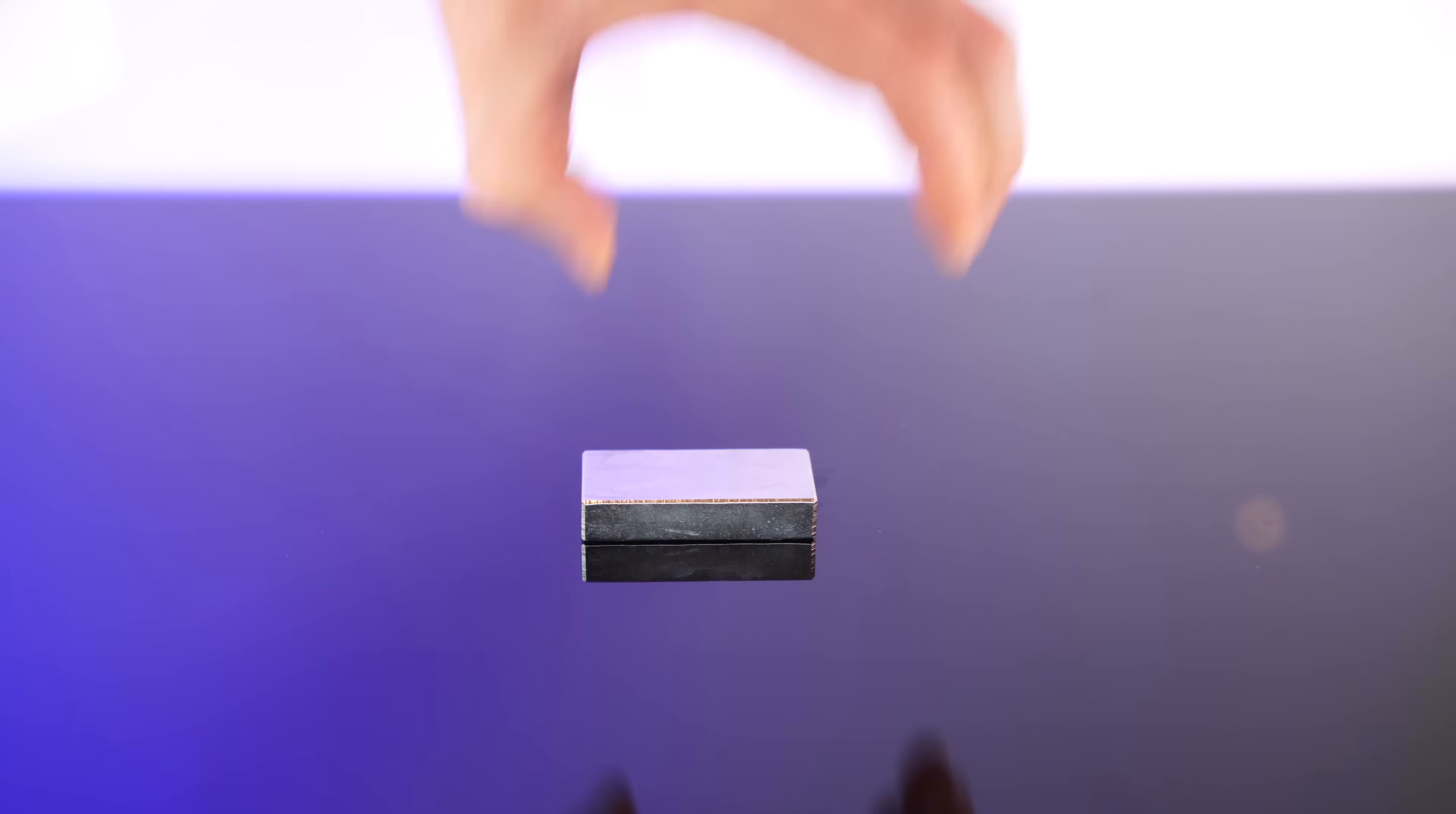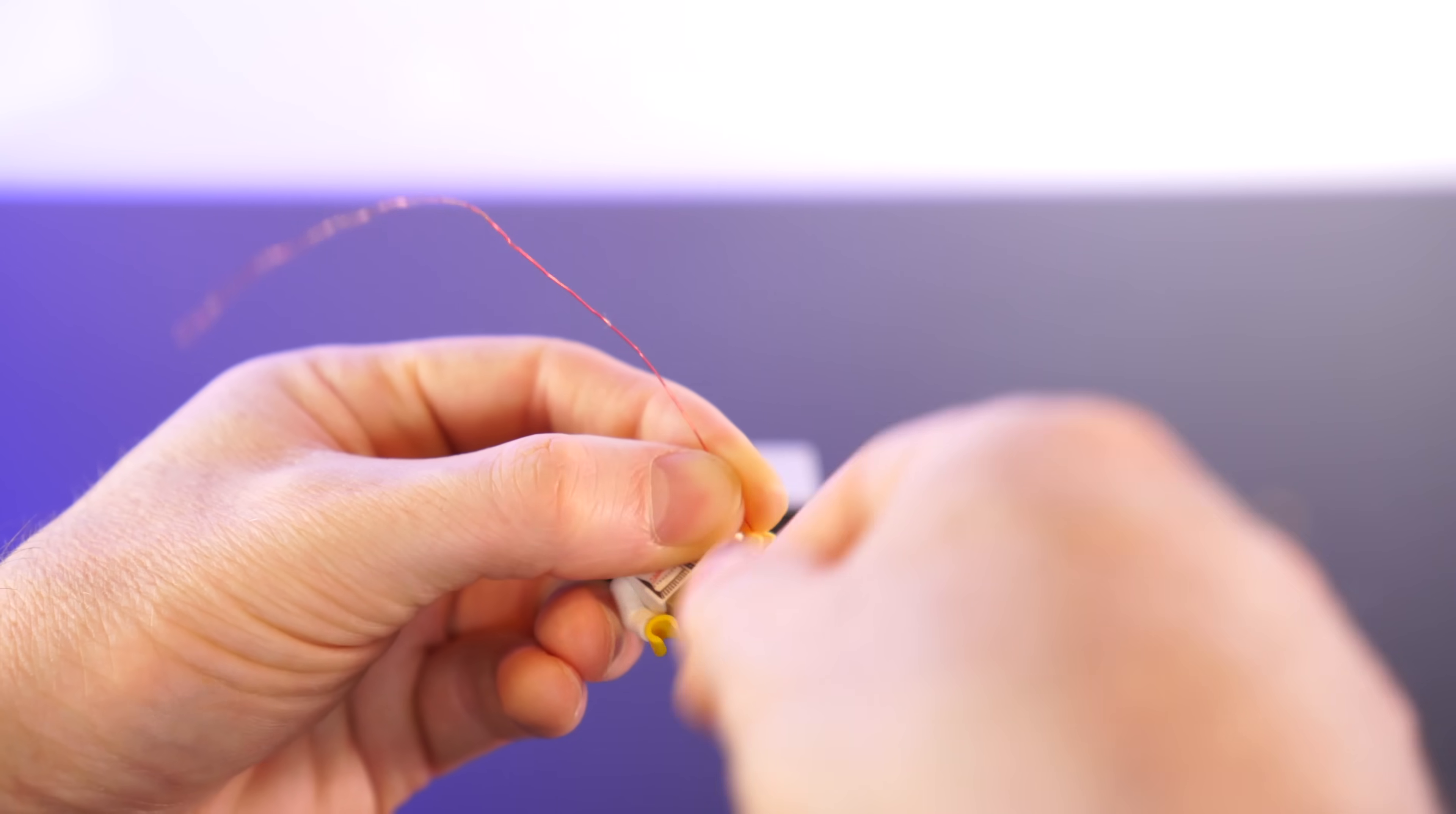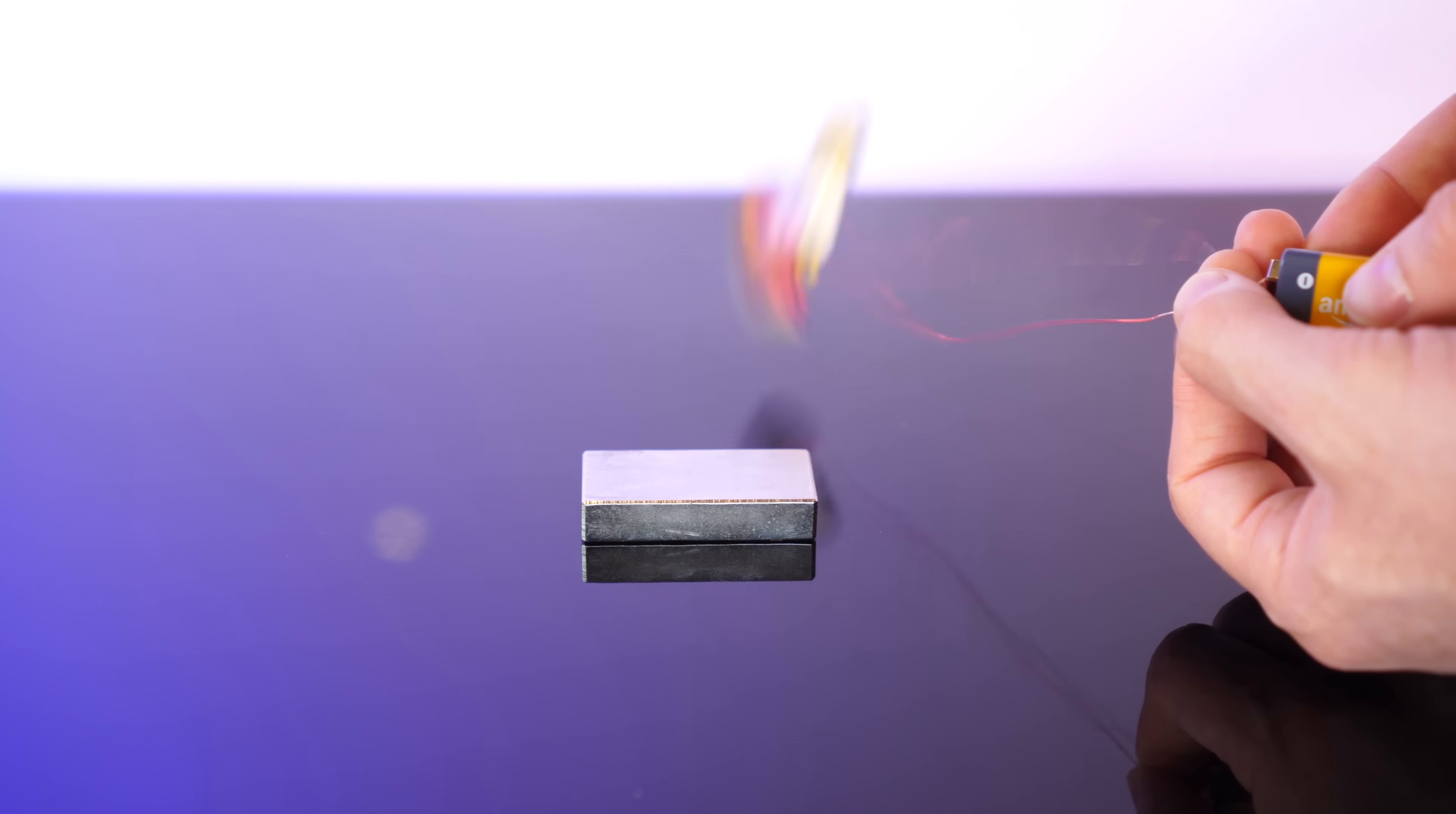If we pop this beefy magnet here, and then take this little dude and wrap his legs up in copper wire to make sure he can't escape, then pop him onto the magnet, and chuck a charge through the coil, he jumps away from the magnet.